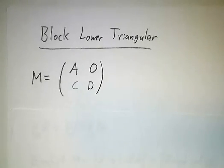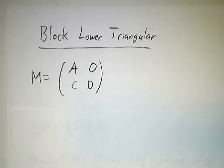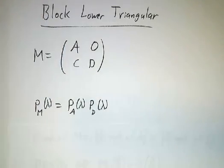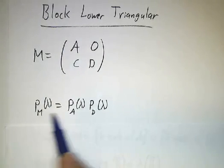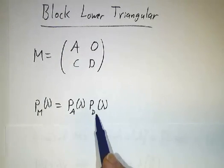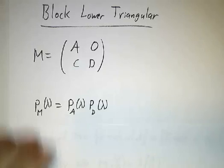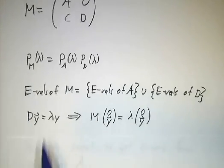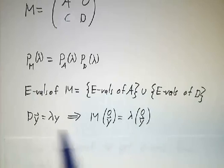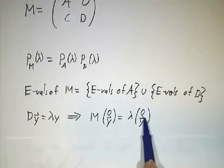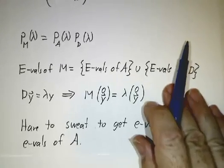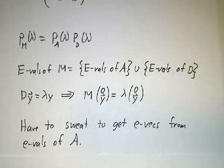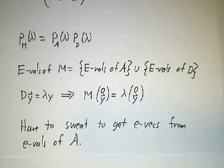If something is block lower triangular, it works the same as block upper triangular, except the roles of A and D are reversed. You still have the eigenvalues of M as the eigenvalues of A together with the eigenvalues of D. And if you have an eigenvector of D, now you can pad it upwards. But if you have an eigenvector of A, you cannot pad it downwards — the eigenvalues of A are eigenvalues of M, but you have to work hard to find the eigenvectors.